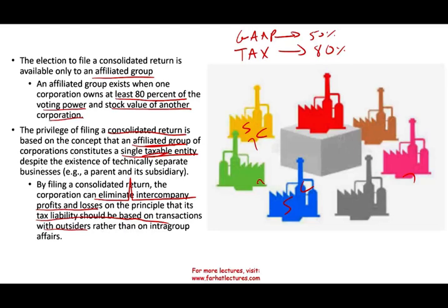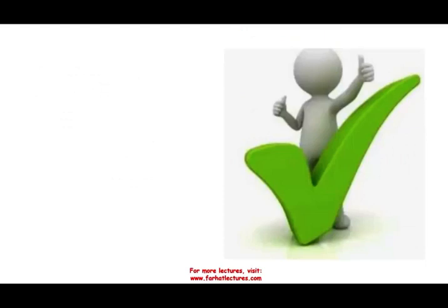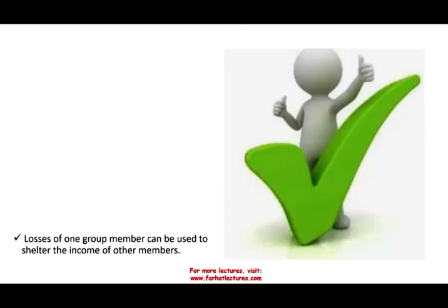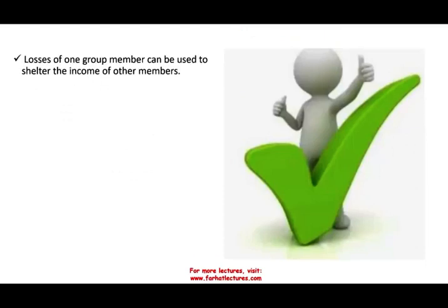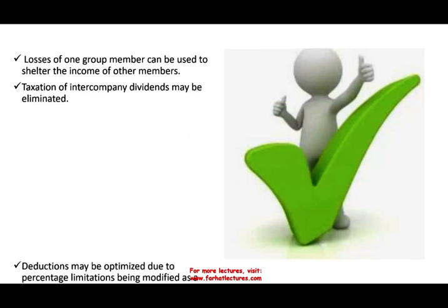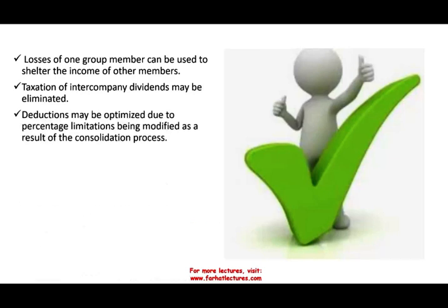By filing a consolidated return, the corporation can eliminate intercompany profit and losses, on the principle that tax liability should be based on transactions with outsiders rather than intragroup affairs. The advantages of consolidation include: losses from one group can be used to shelter the income of another — if A has income and owns 80% of B, and B has losses, they can offset the gain and pay less taxes. Also, taxation of intercompany dividends might be eliminated.